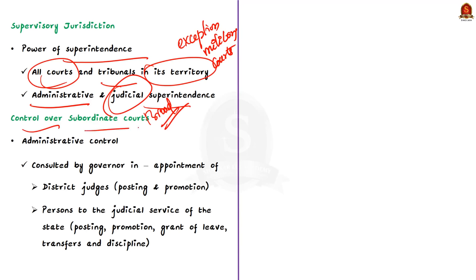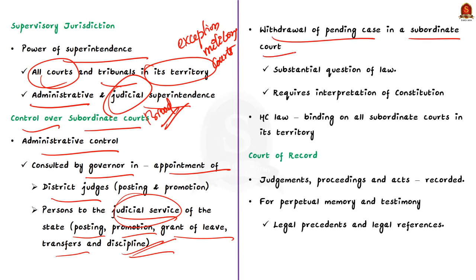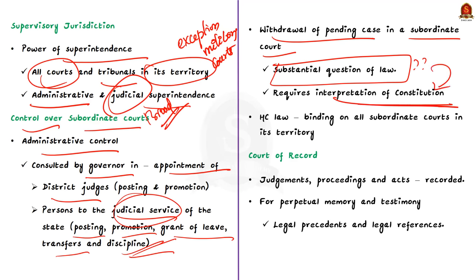The High Court also has administrative control over subordinate courts. It is consulted by the governor in matters of appointment, posting, and promotion of district judges and appointments to the judicial services of the state. It deals with posting, promotion, grant of leave, transfers, and discipline of members of the judicial services. It can withdraw a case pending in a subordinate court if it involves a substantial question of law requiring interpretation of the Constitution. Its law is binding on all subordinate courts within its territorial jurisdiction, in the same way that the Supreme Court's law is binding on all courts in India.